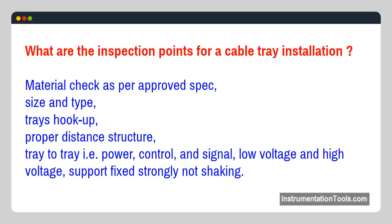What are the inspection points for cable tray installation? Material check as per approved spec, size and type, trays hookup, proper distance structure, tray to tray (i.e., power, control, and signal), low voltage and high voltage separation, and support fixed strongly — not shaking.